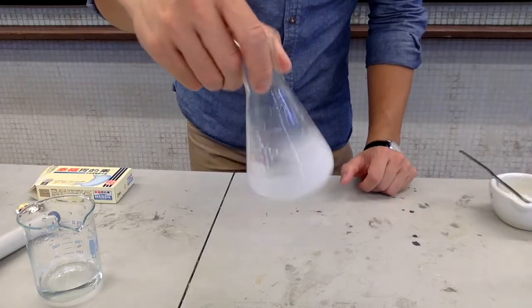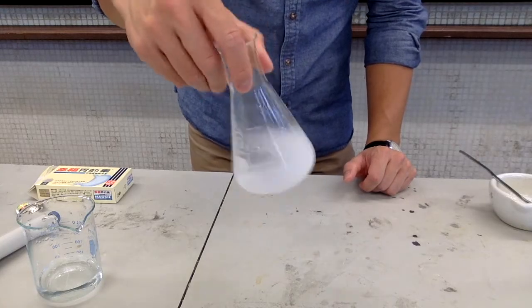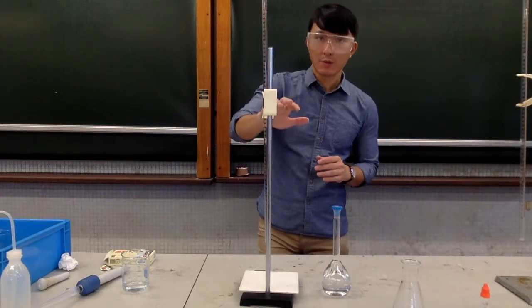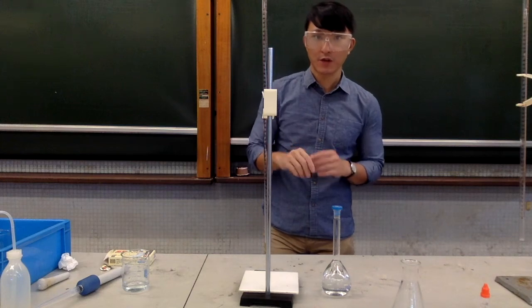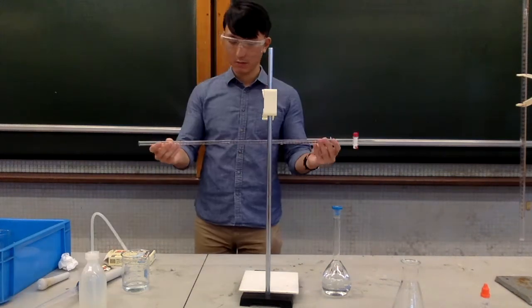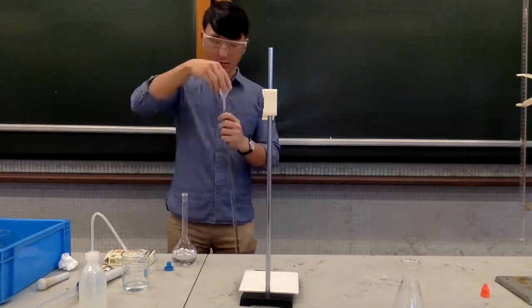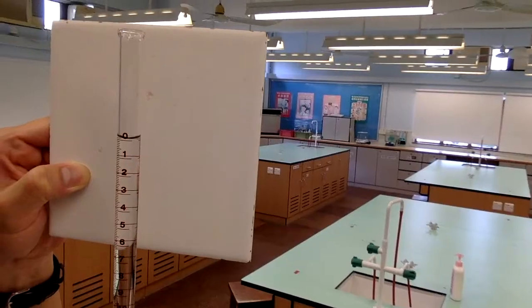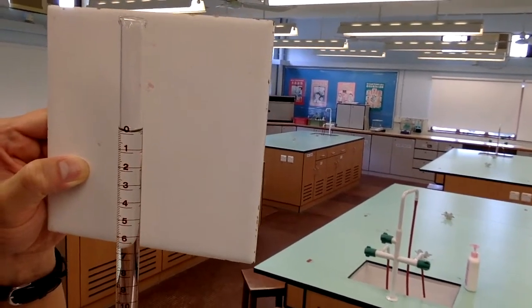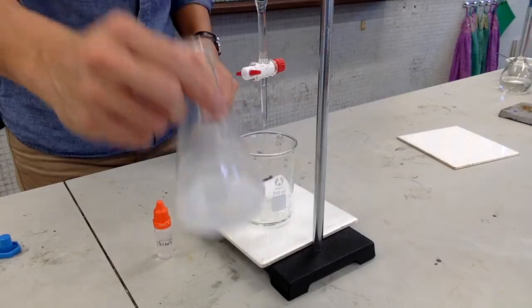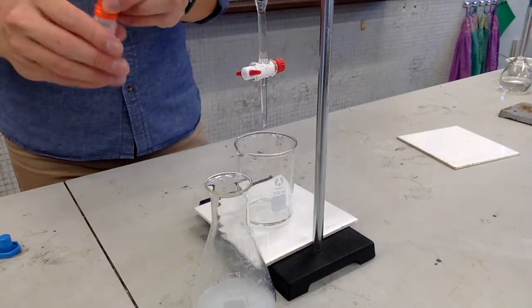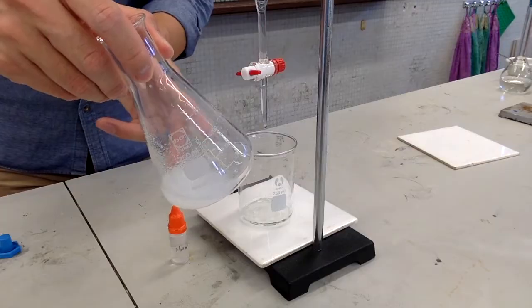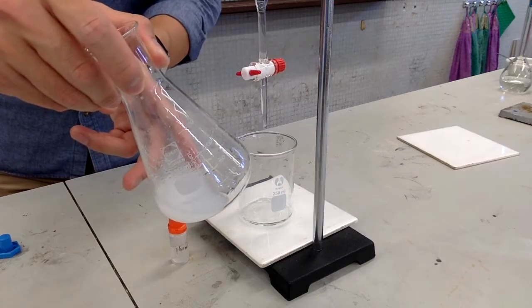Swirl the mixture to make sure that all the aluminum hydroxide has reacted with the acid. Now, wash the burette and load it with the sodium hydroxide solution for the titration. Record the initial burette reading. To the analyte, add a few drops of phenolphthalein indicator. The analyte should remain colorless because it is acidic due to the unreacted hydrochloric acid.